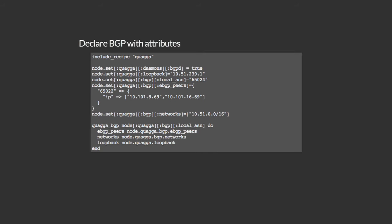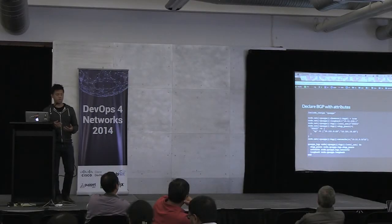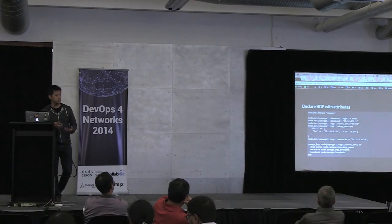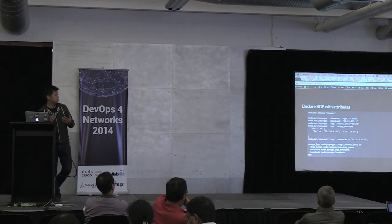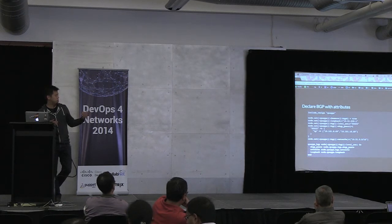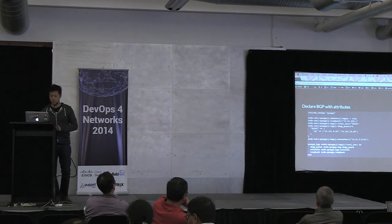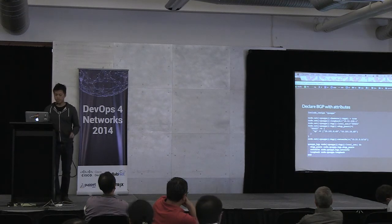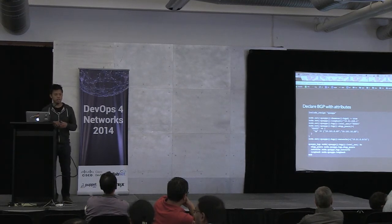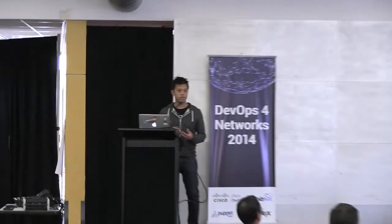Here is where we declare BGP using just attributes. You specify — in this case we use a private AS in one of the clusters. We use those IP addresses for the eBGP neighbor, and we implement a resource which builds all of that out onto the system. In the end of the day you manage this as data and attributes instead of actual configuration.